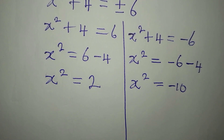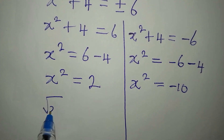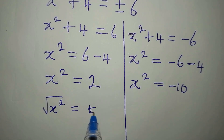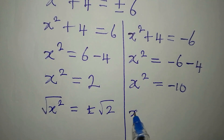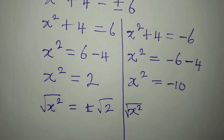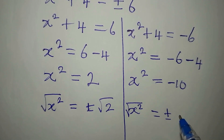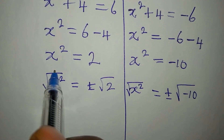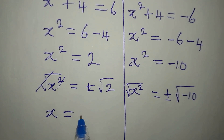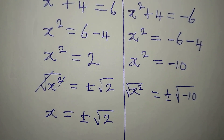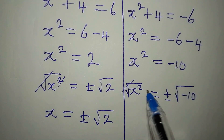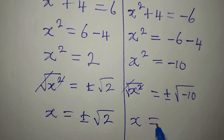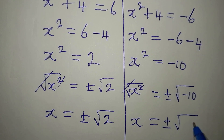We take the square root of both sides again to find x. So the square root of x squared equals plus or minus the square root of 2 for the first equation, and plus or minus the square root of negative 10 for the second. This gives us x equals plus or minus root 2, and x equals plus or minus root of negative 10.